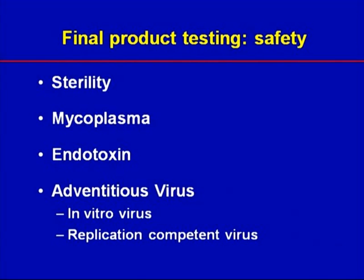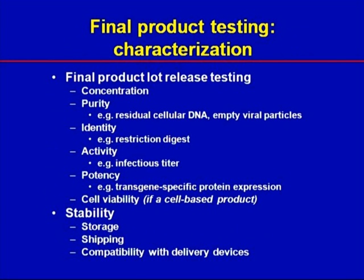In addition to sterility, mycoplasma, and endotoxin, for products like gene therapy vectors manufactured on human or animal cells, we ask for in vitro adventitious virus testing. It may also be appropriate to test for replication-competent revertants or recombinants depending on what kind of vector you are using. Final product characterization is often a challenge when your product is a complex biologic, and you'll probably have to develop unique assays specific for your product's concentration, purity, identity, activity, potency, or viability. The emphasis for products at Phase I is mainly to provide enough information to evaluate safety, so not all assays may need to be performed. The critical assays will depend on the nature of your product, and it's a good idea to discuss your lot release criteria with the FDA during a pre-IND meeting.